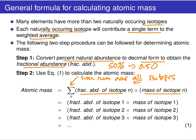When you add all of those weighted masses of the isotopes together, you will arrive at the atomic mass, which is a weighted average according to equation one.